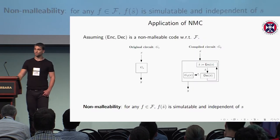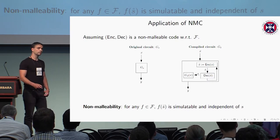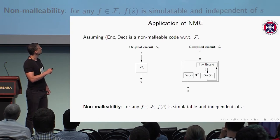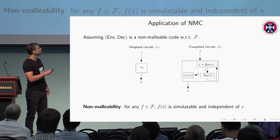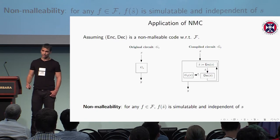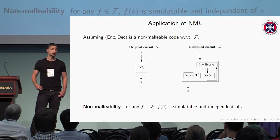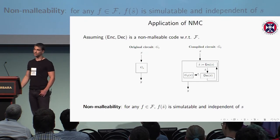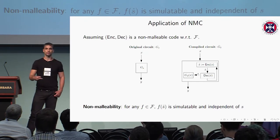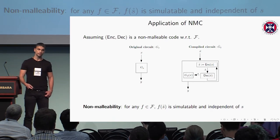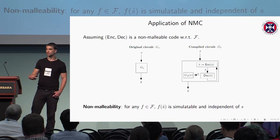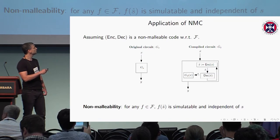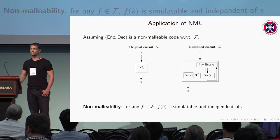Non-malleable codes provide a straightforward way to protect against such attacks. We encode our private state using a non-malleable encoding scheme. The compiled functionality G-hat first needs to recover the original message: it decodes S-hat and recovers S, then computes the original functionality over S and X. This requires that the computation is trusted. Any attack against the memory — any application of a function F — can be simulated without having access to the original private state.